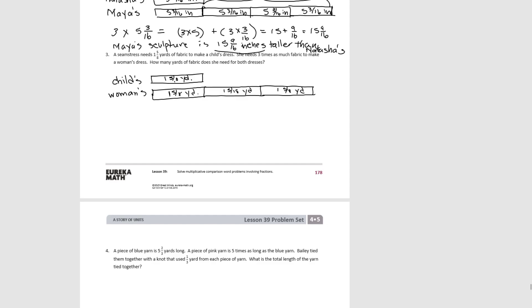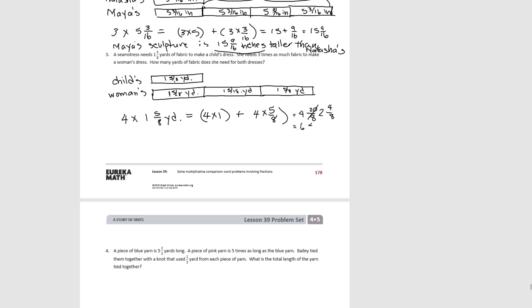We could also realize that it's the same amount — one and five-eighths yards — four times total. So we could do four times one and five-eighths yards in one step. Using the distributive property: four times one for the whole number, and then four times five-eighths, we'd get four and twenty-eighths. And twenty-eighths — that would be two and four-eighths. So when we add them together, we get six and four-eighths, which is equivalent to six and a half yards.